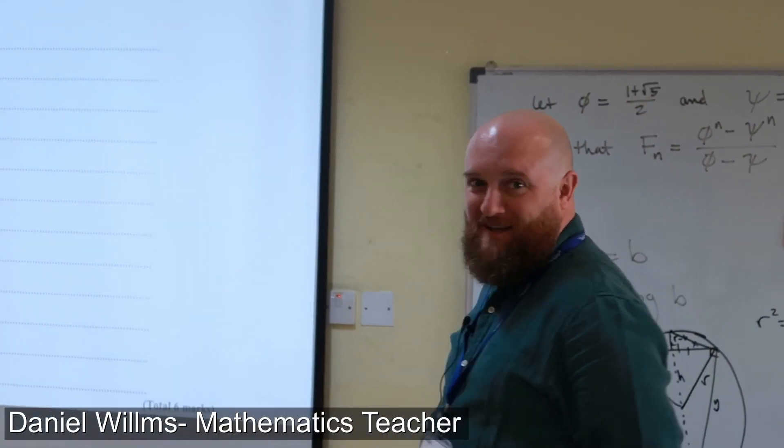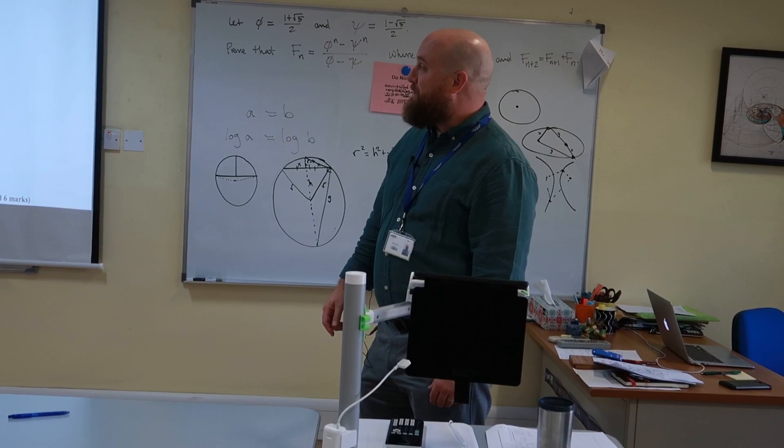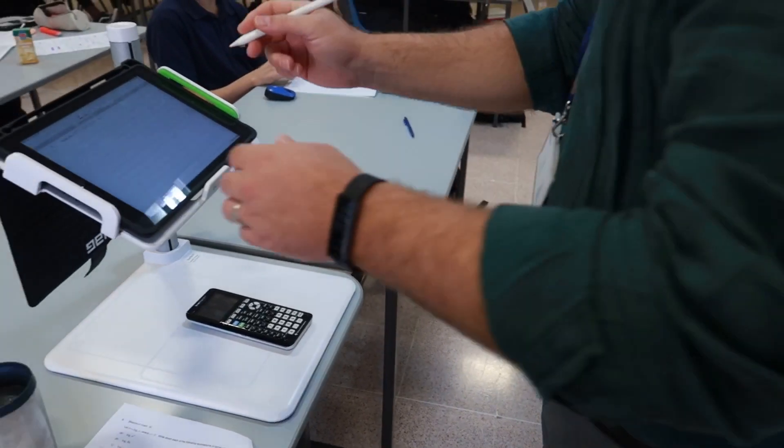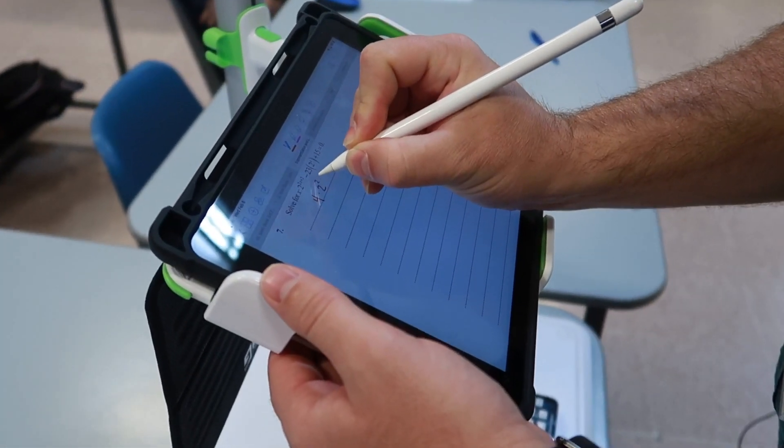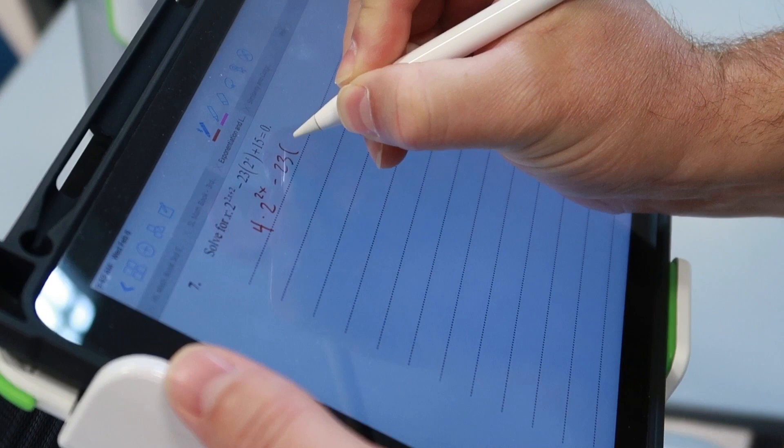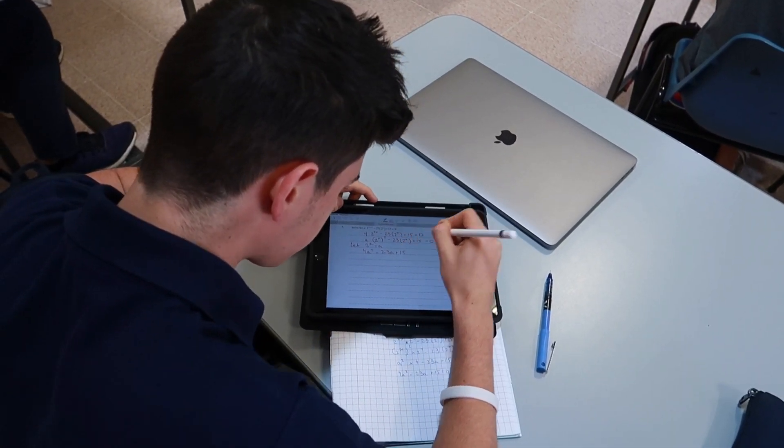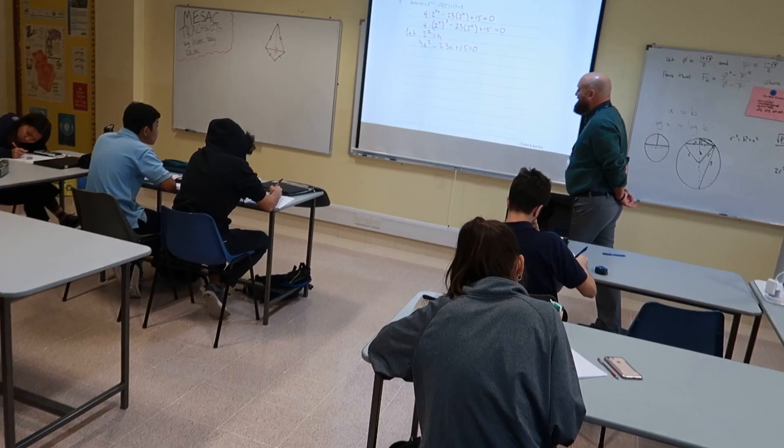We have these lovely iPads that Mr. Usain acquired for us last year that we have been using with AirPlay to project. Simplifying the first part we've got four times two to the 2x minus 23 times two to the x plus 15 is equal to zero. I mean it's not the easiest quadratic in the world to solve but it's not impossible.